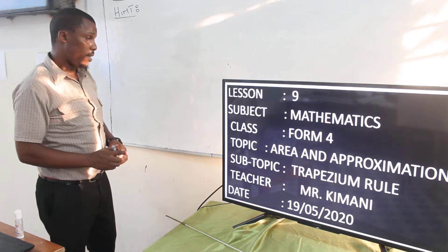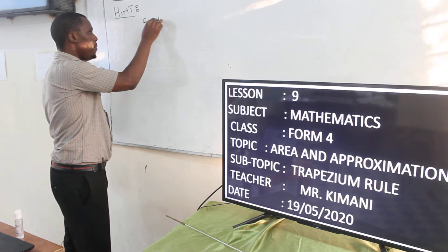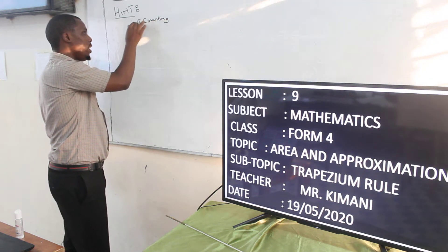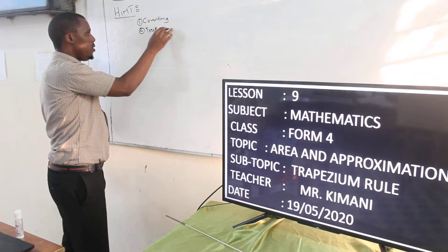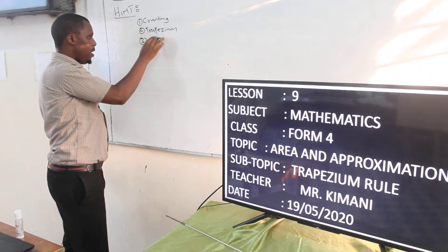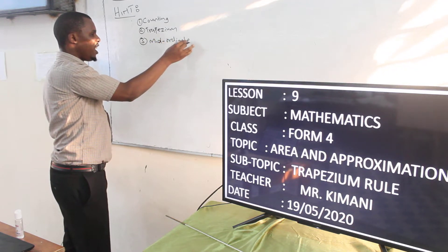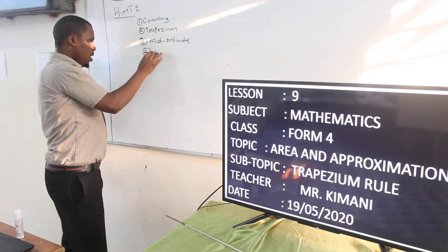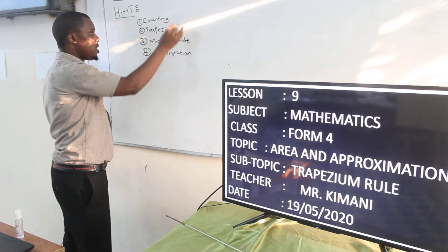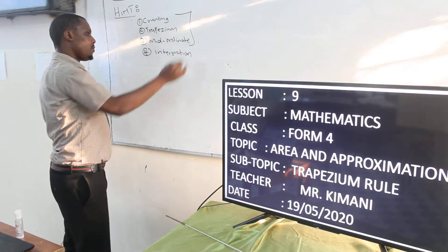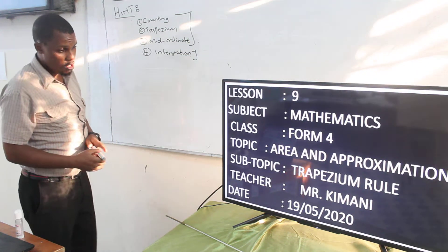I remind you that you have four techniques. We have the counting technique — that is number one. Then number two, we have the trapezium rule. From the trapezium rule, we have the mid-ordinate. Those are three of them: number three is mid-ordinate. From the mid-ordinate, we have the interpolation method. So in this topic, we are going to deal with three of them, because the interpolation I am going to teach you in the next topic when I teach about calculus.